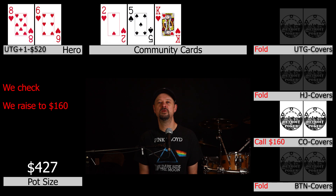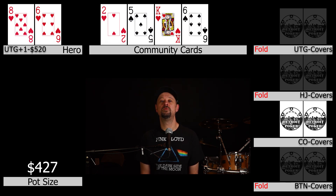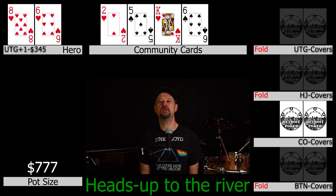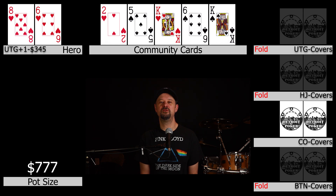The turn comes a six of spades — we decide to bet $175. Once again the cutoff goes into the tank and ultimately calls. We're off to the river heads up. The river comes a king of spades, which brings in the backdoor flush. Now we have a pretty weak hand, so we check to the cutoff.